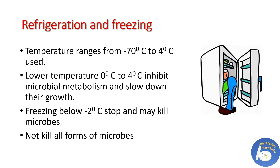Refrigeration and freezing: just as high temperature, low temperature can also be an easy and effective way to control microbial growth. Temperature ranges between minus 70 degrees Celsius to 4 degrees Celsius can be used to check microbial growth. Lower temperatures of 0 to 4 degrees Celsius inhibit microbial metabolism and slow down their growth, helping to preserve food and medical supplies. Freezing below minus 2 degrees Celsius may stop microbial growth and even kill them, particularly microbes sensitive to lower temperatures. However, it is not a very effective method to kill all types of microbes.